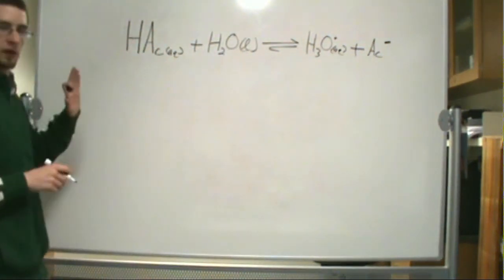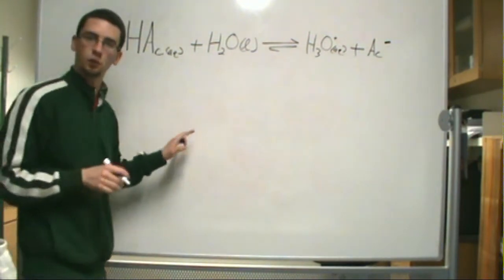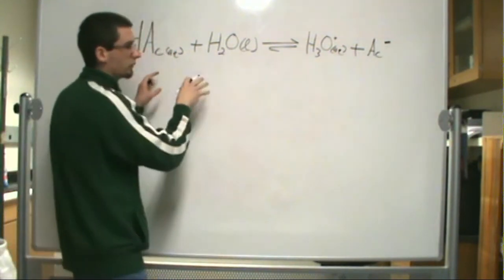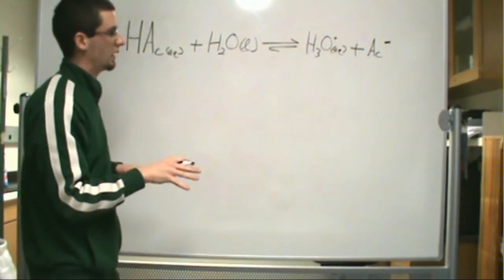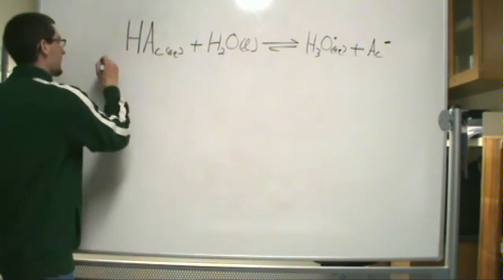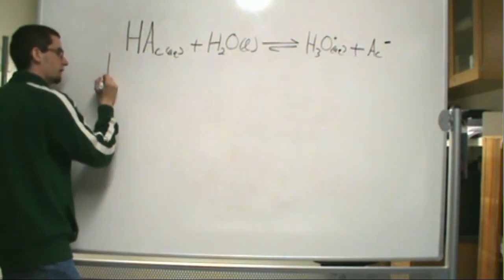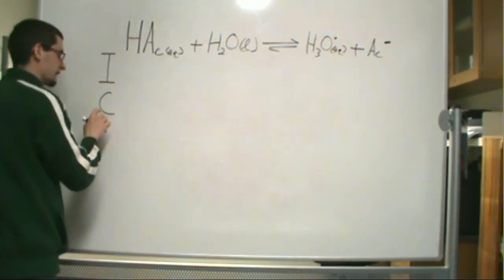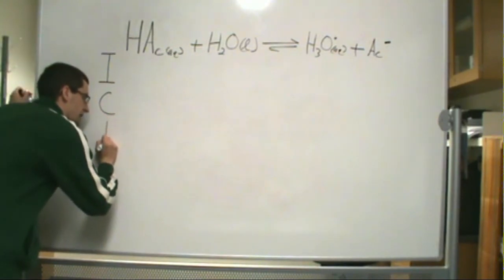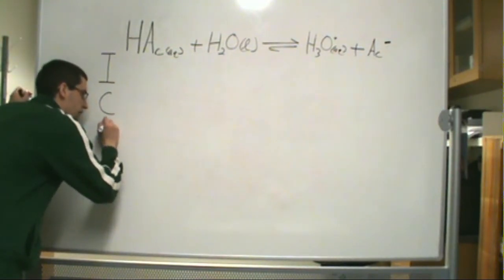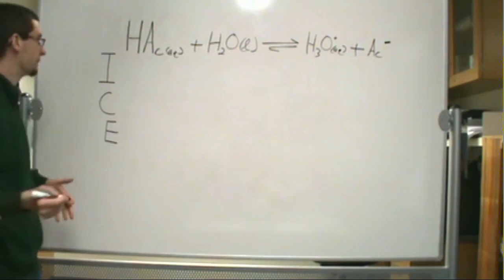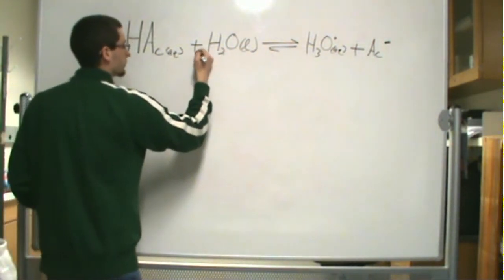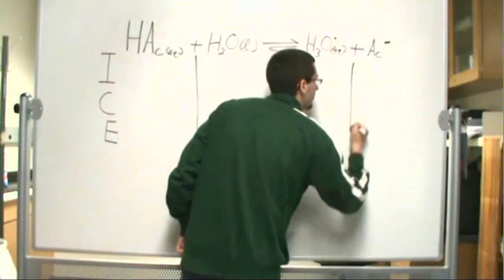So we can also draw an ICE diagram for this. What is an ICE diagram? Well, what you end up doing is you end up writing out the chemical reaction occurring for your system, and you determine what is the initial concentration for I, C is the change in the concentrations, and E is the concentration of the species at equilibrium. So we're going to have three columns. We're going to exclude water because there's so much water we really just don't care about it.